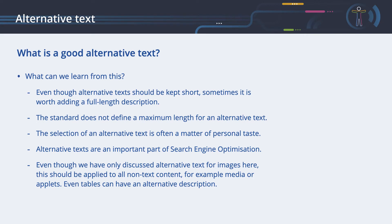What can we learn from this? The standard does not define a maximum length for an alternative text — you should always try to communicate the full message of an image to the user. The selection of an alternative text is often a matter of personal taste; when multiple people write an alternative text, the probability is very high that they will write different texts. Alternative texts are also an important part of search engine optimization, as search engines evaluate alternative text to make images findable. As a consequence, making your website more accessible will improve your search engine ranking.